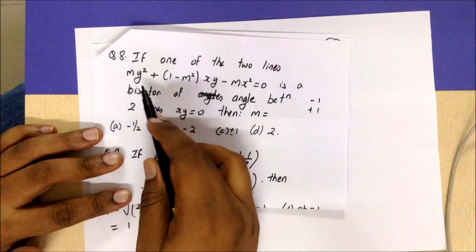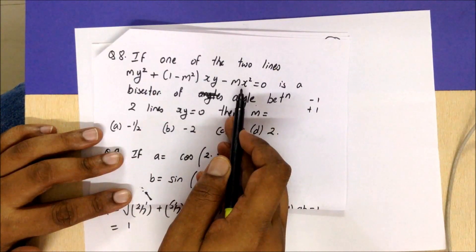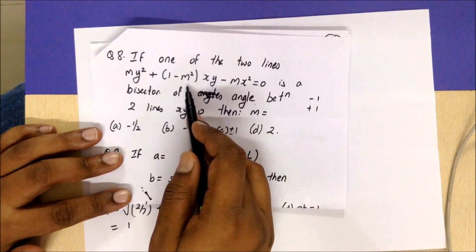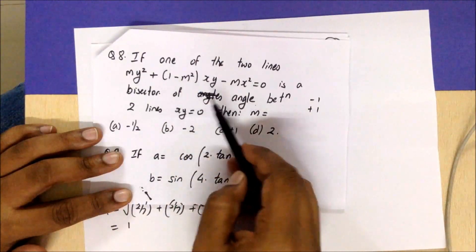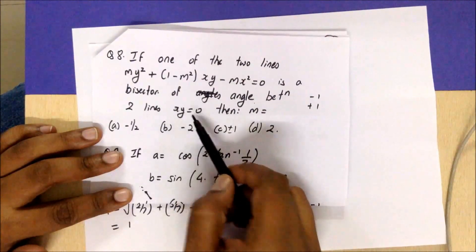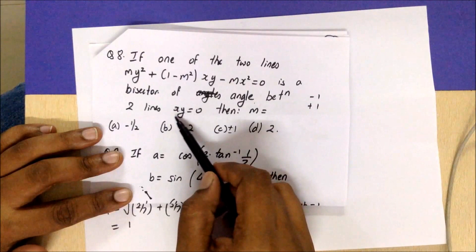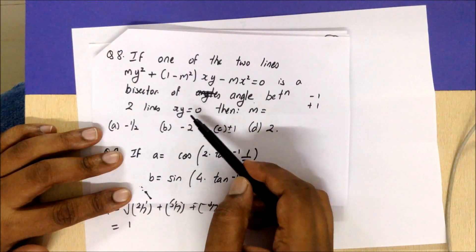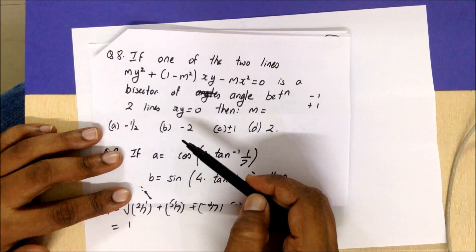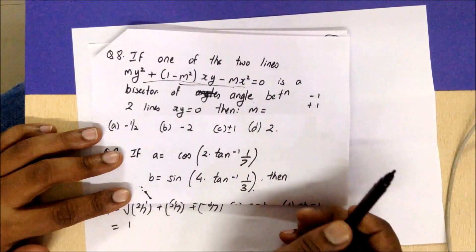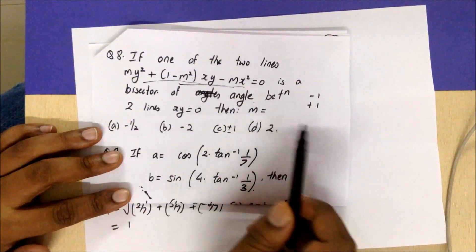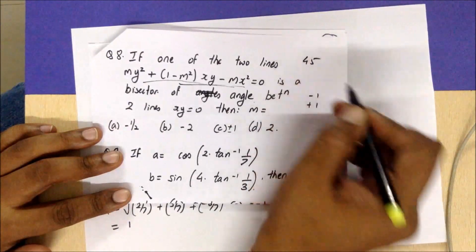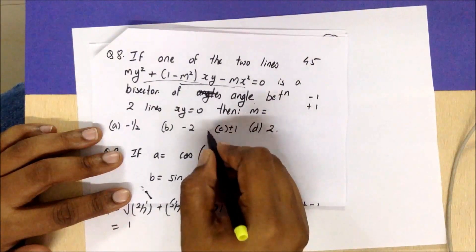Moving to the next question: if one of the two lines represented by the given equation is a bisector of the angle between the lines xy = 0, what is the value of m? The equation xy = 0 represents the x-axis and y-axis. The angle bisectors of the axes have slopes of +1 or −1, making 45° or −45° angles. Therefore the slope should be either +1 or −1, and the option is C.